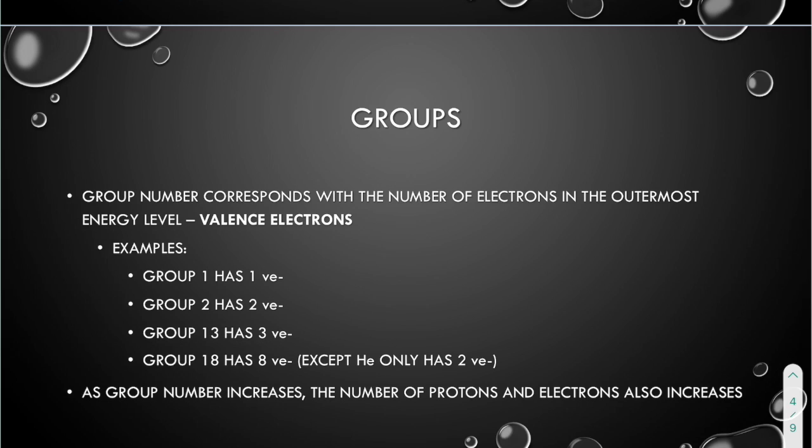The groups go up and down and they correspond with the number of electrons in the outermost energy level. Those are called the valence electrons, that's an important vocab term. So group one has one valence electron, group two has two valence electrons. Remember we skipped those transition metals. So group 13 has three valence electrons and group 18 has eight valence electrons. Except note that helium is at the top of group 18 and it only has two valence electrons, not eight. As the group number increases, the number of protons and electrons also increases.